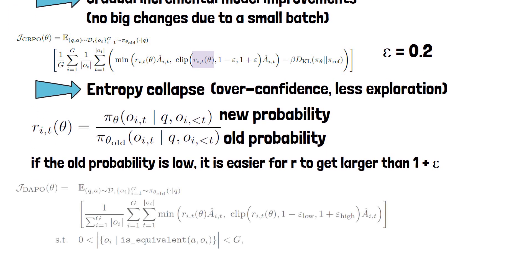Okay, so what is DAPO changing here? In GRPO, a single hyperparameter, epsilon, controls both the lower and upper clipping range. DAPO decouples them into two different hyperparameters and increases the upper clipping range from 0.2 to 0.28. This allows the model more freedom for exploration. The researchers do not increase the lower clipping range to avoid decreasing probabilities of unlikely tokens to zero.